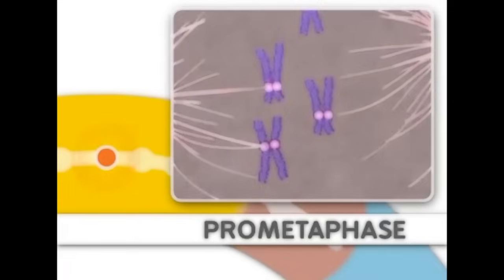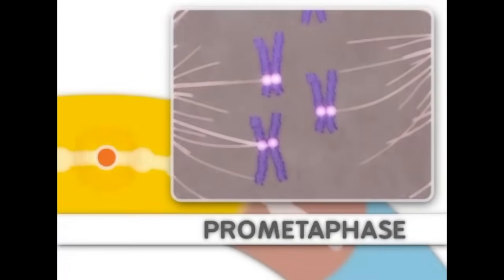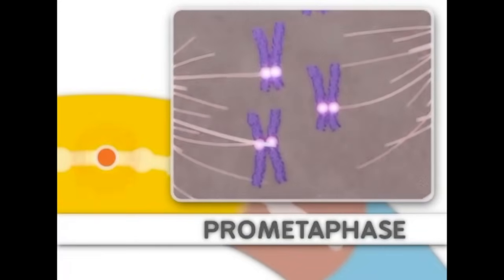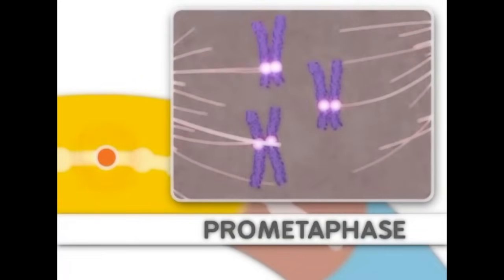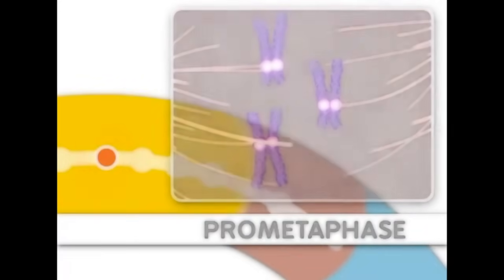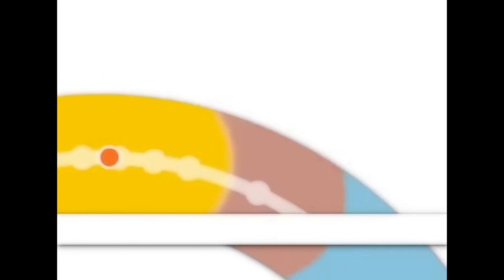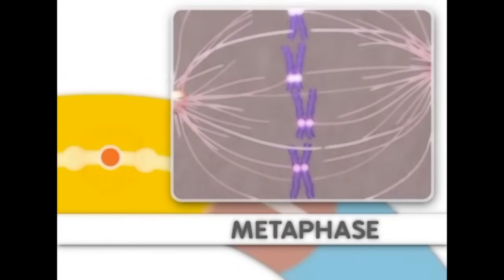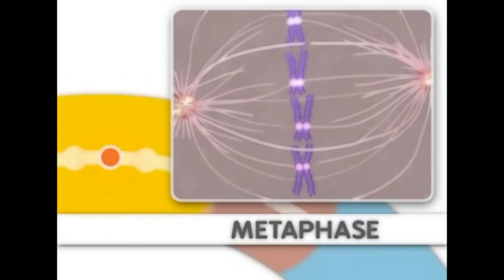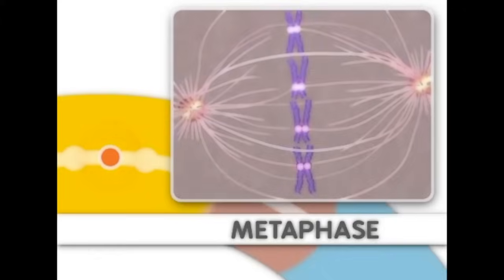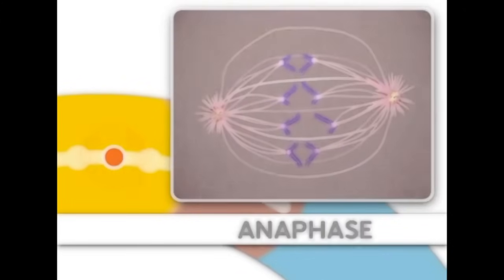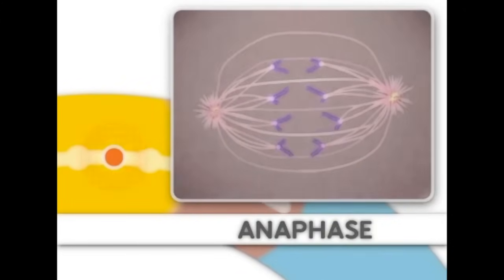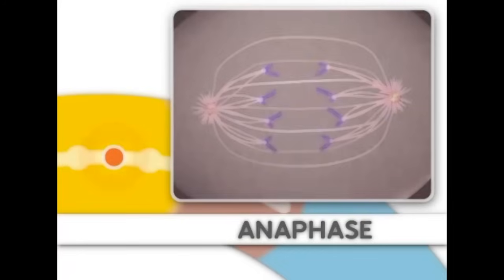Next comes prometaphase, where microtubules attach to the chromosomes. This step is followed by metaphase, where the chromosomes align. Metaphase is followed by anaphase, where the chromosomes separate.